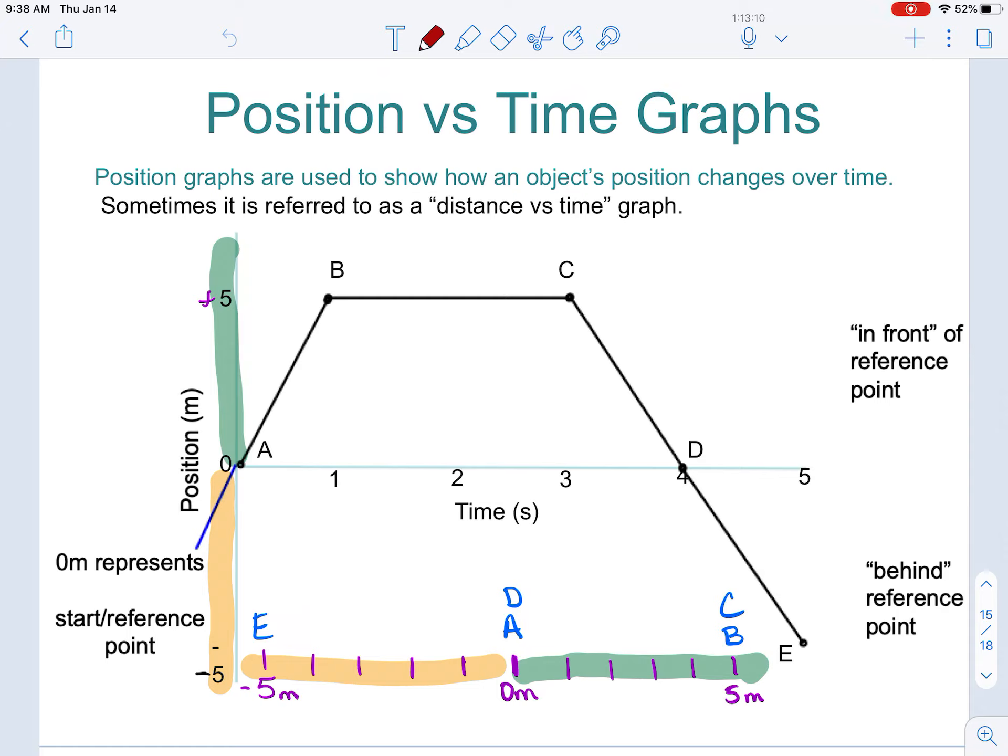Then you can see in the green, that is the positive side of my map where I am located to the right or to the east of that reference or zero meter mark, which is our reference point, and then the orange side of my map is going to be the negative side as far as my position values go, where I am now located to the left or to the west of that zero meter mark.